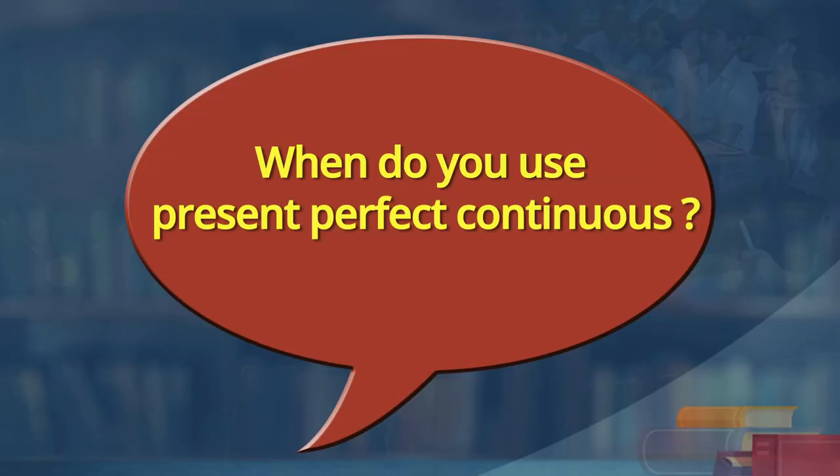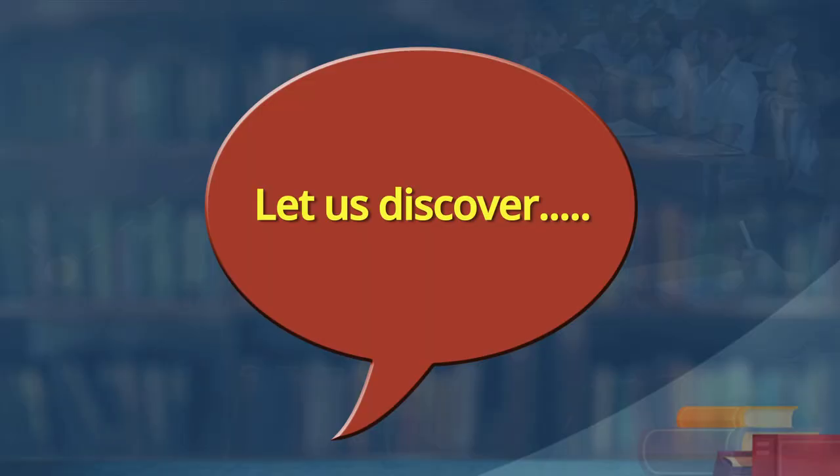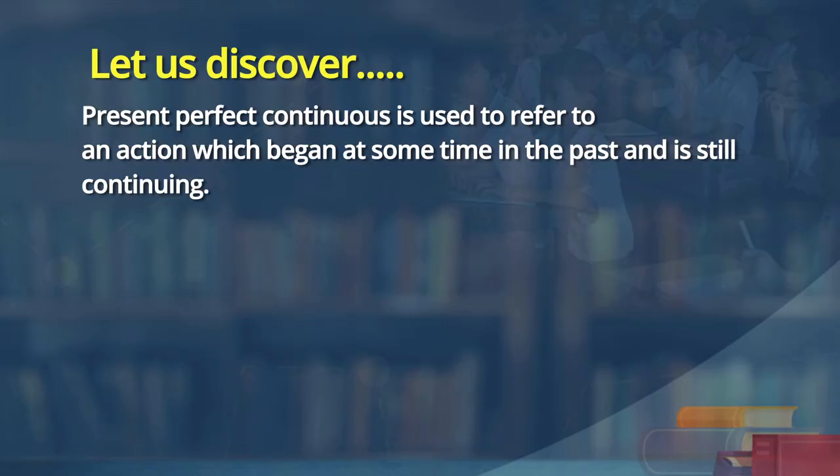Learners, when do you use present perfect continuous? Now you must have got it. Krithi, when do you use present perfect continuous tense? We use present perfect continuous tense to show an action which has started in the past and is still going on. Present perfect continuous is used to refer to an action which began sometime in the past and still continues.